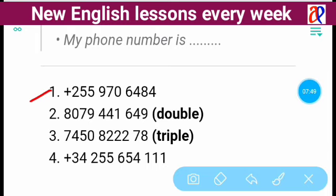Now, if your phone number is the first example, and someone asks 'What's your phone number?' you can answer in two ways: 'It's plus two five five nine seven zero six four eight four,' or 'My phone number is plus two five five nine seven zero six four eight four,' which can also be said as plus two double five nine seven zero six four eight four.